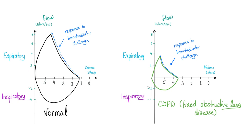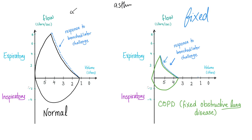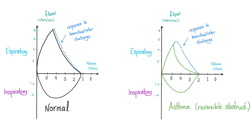Flow volume loops: normal shows a typical inspiration/expiration curve. In COPD, inspiration is slightly decreased and expiration shows severe coving (concavity). When you give a bronchodilator, the loop doesn't change very much — that's why COPD is a fixed obstruction. This is different from asthma, which is a reversible episodic obstruction. With a bronchodilator challenge in asthma, there is dramatic improvement in the flow volume loop.